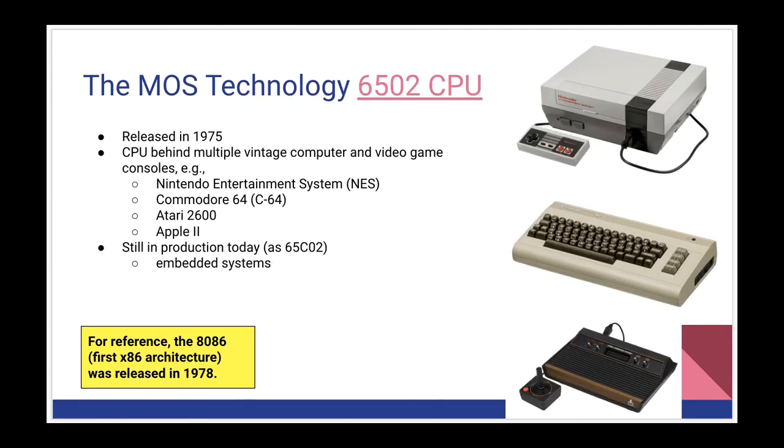We're looking at the MOS Technology 6502 CPU. It's old, released in 1975, which happened to be the year I was born, and it is the CPU behind a lot of our vintage computing and gaming systems, including the Nintendo Entertainment System of the early 80s, and the Commodore 64, which was released in the 70s. Also, the Atari 2600, Apple II, and others. It is still in production today as the 65C02 for use in embedded systems. Things like the 65C02 are low power, so when we need a simple computer to do simple tasks, sometimes like running control hardware, these old architectures are still useful for that.